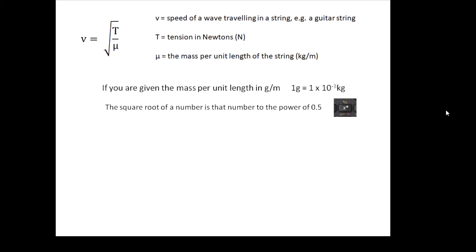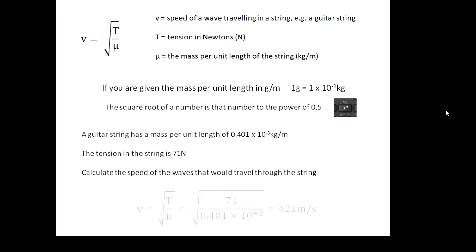Let's do this one together. A guitar string has a mass per unit length of 0.401 × 10^-3 kilograms per meter. The tension in the string is 71 Newtons. Calculate the speed of the wave. I don't need to worry about the mass, it's given in kilograms per meter, so I don't need to change it. I just bung in the numbers, get the square root, and the answer I get is 421 meters per second.